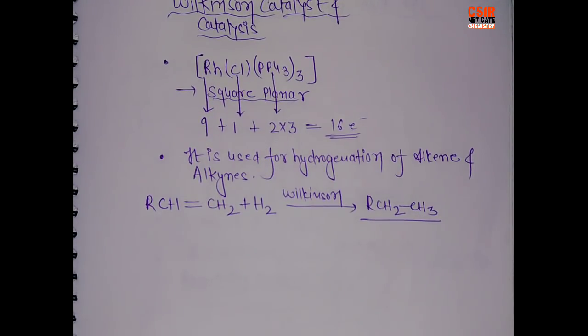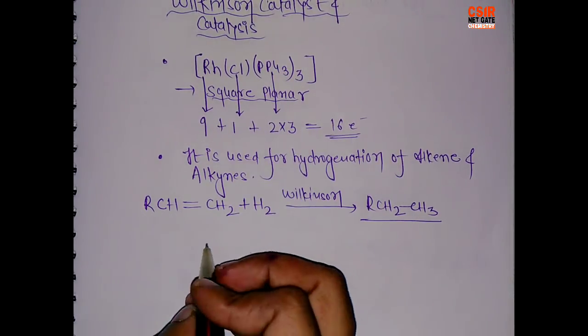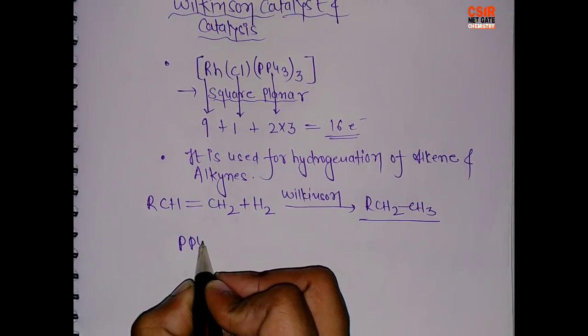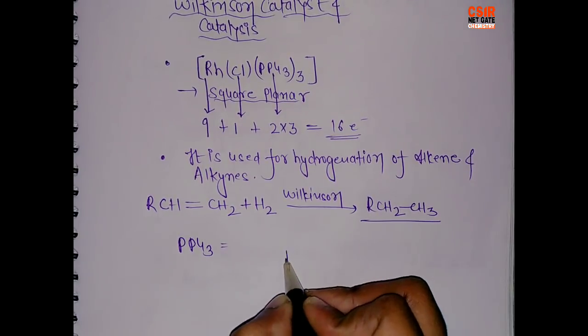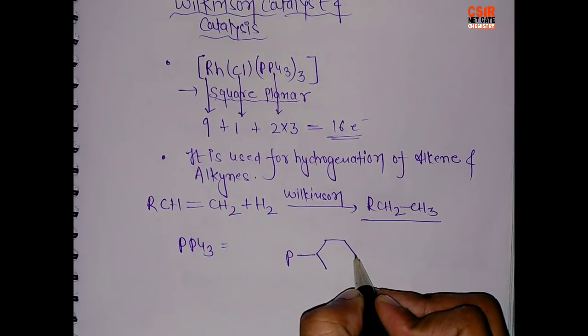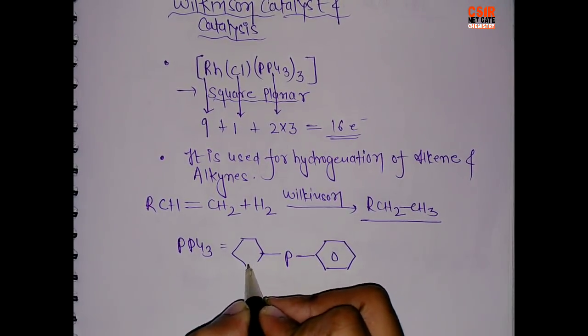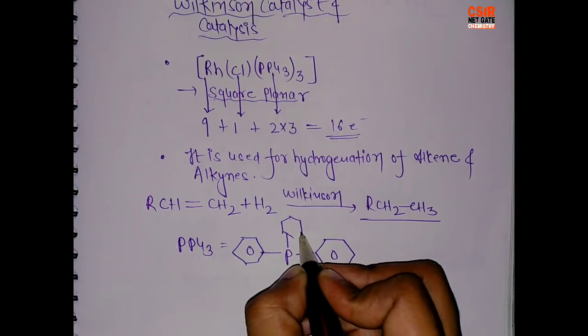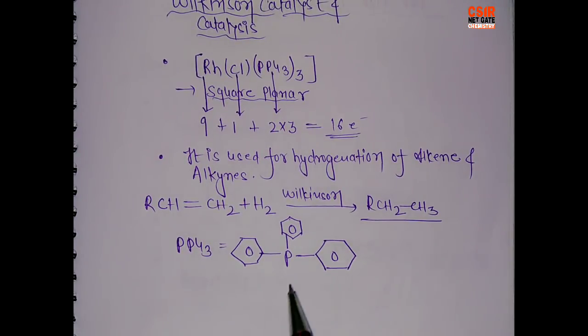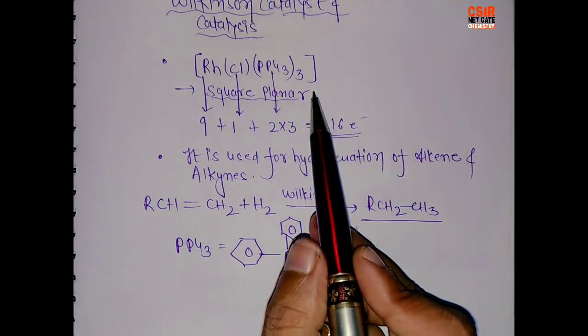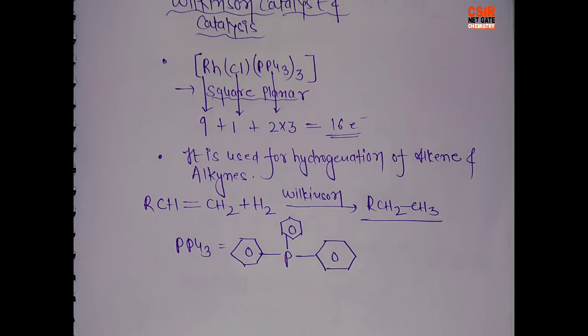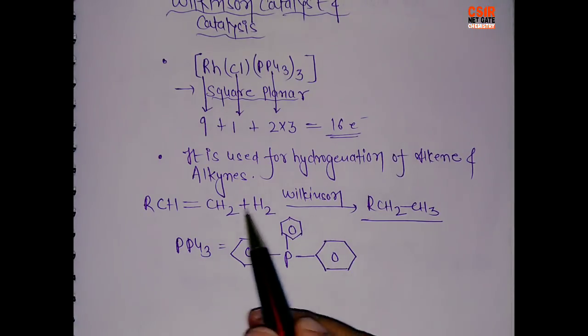Now see, this Wilkinson catalyst, if we look at the ligand PPh3. PPh3 is nothing but phosphorus with one phenyl ring, another phenyl ring, and one more here. So if you look at it, it is a very bulky ligand, and we have such 3 units.